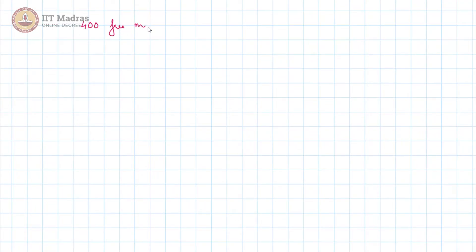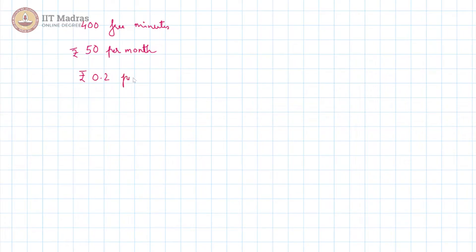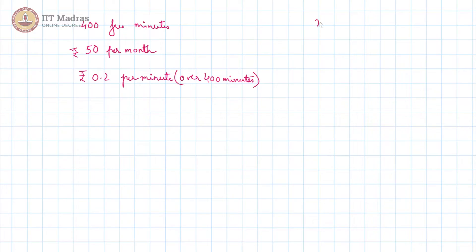Let us put down our variables. There are 400 free minutes and a 50 rupee charge per month, and 20 paise — that is 0.2 rupees — per minute over 400 minutes. Our independent variable is the number of minutes; the bill is dependent on the number of minutes. So our x variable is the number of minutes and the y variable is the bill amount.